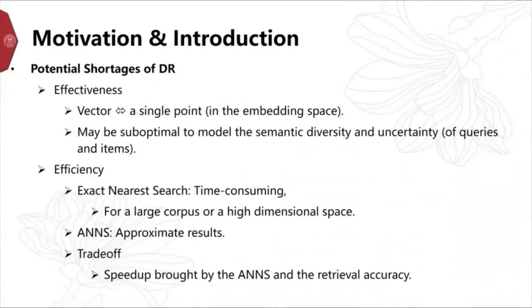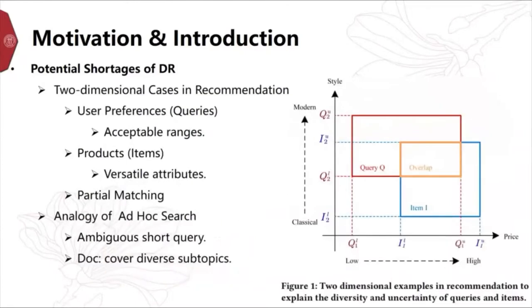For efficiency, exact nearest search is time-consuming for large corpus, while approximate nearest neighbor search can speed up the searching process with the sacrifice of accuracy. Figure 1 shows an example in recommendation, where the queries and items correspond to user preferences and products, respectively.